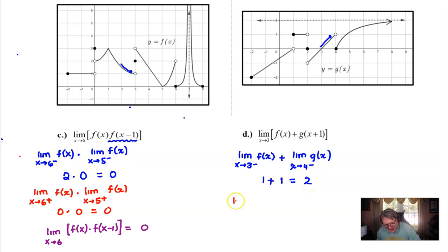Put that on the back burner and do the same thing, but let x approach three from the right of your f of x and add it to the limit as x approaches four from the right of your g of x. So if we approach three from the right on our f of x, it looks like the y value is going to converge upon that value of three. And if I approach four from the right, it looks like the y value is going to converge upon that zero. And three plus zero, of course, is three.